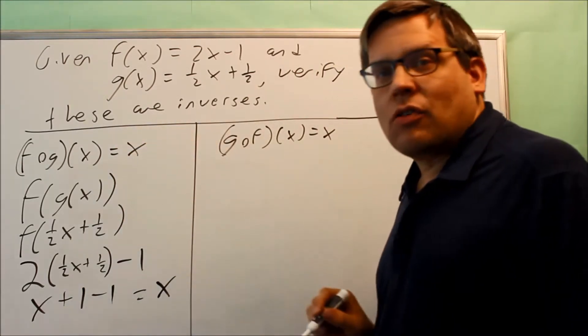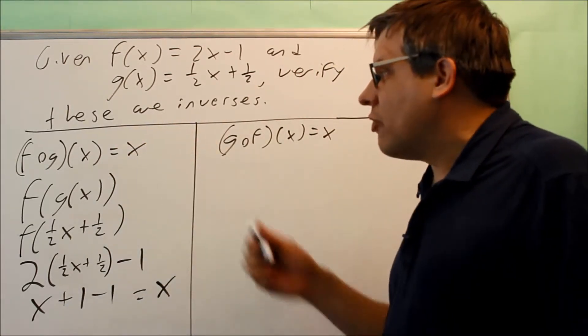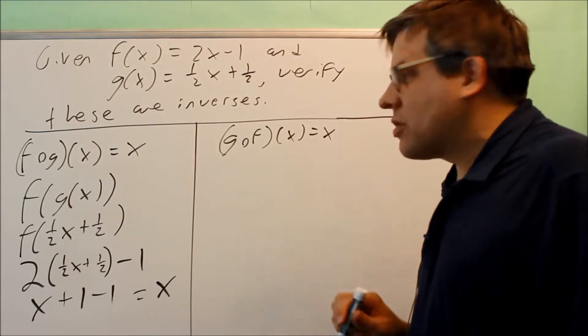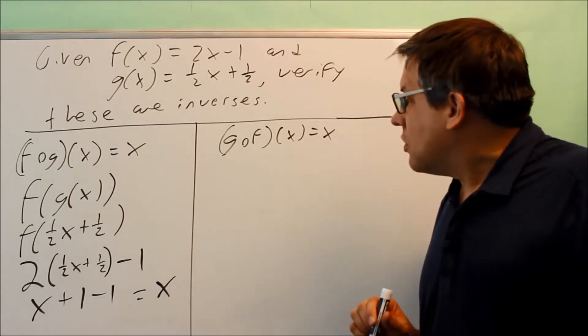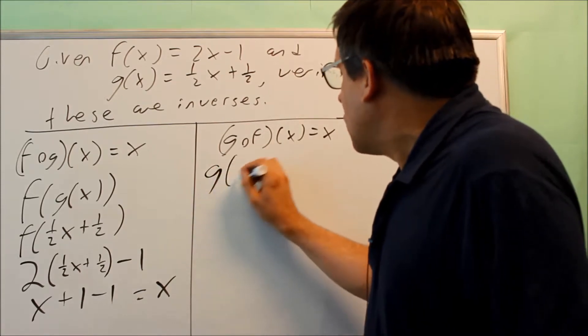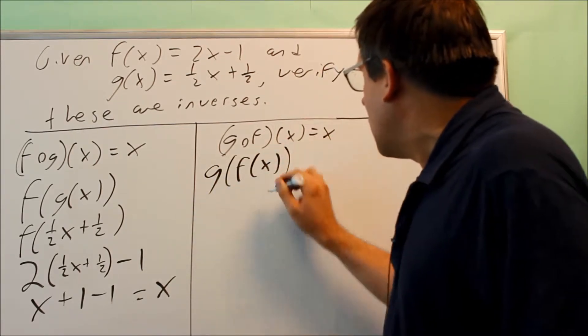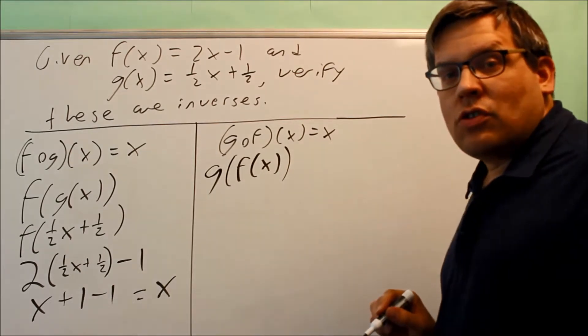That's what we're supposed to get for the first part of this if they really are, in fact, inverses. Now we're going to do this side. g of f of x equals x. The definition says that this is f of x put inside of g.